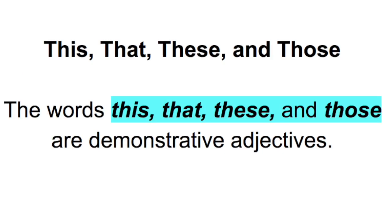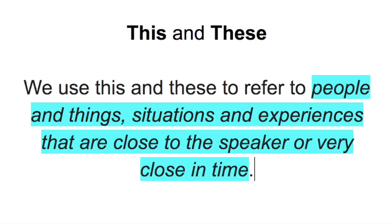The words this, that, these, and those are demonstrative adjectives. First, let's talk about this and these. Generally speaking, we use 'this' or 'these' to refer to people and things, situations and experiences that are close to the speaker or very close in time.